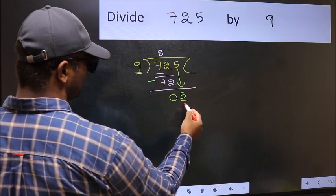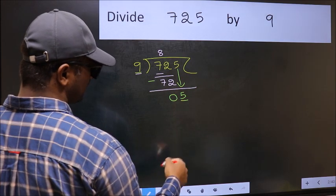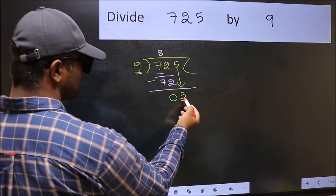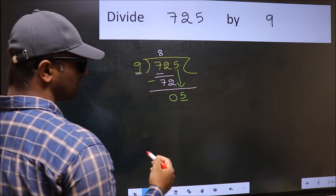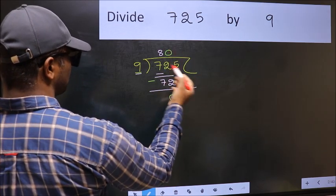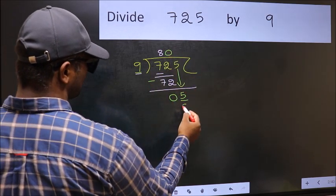If I take 1, we will get 9, but 9 is larger than 5. So what we should do is we should take 0. So 9 into 0 is 0.